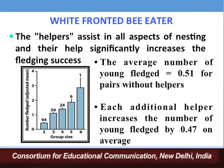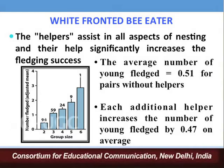Helpers assist in all aspects of nesting and their help significantly increases the chances of nestlings surviving to adulthood. The average number of young fledged is 0.51 when only parents are present, but each additional helper increases the number of young fledged by 0.47 on average. So with a group size of 2 (only parents), average fledglings is 0.5; with 5 individuals it is about 1.75; and with 6 individuals it becomes more than 2.5.